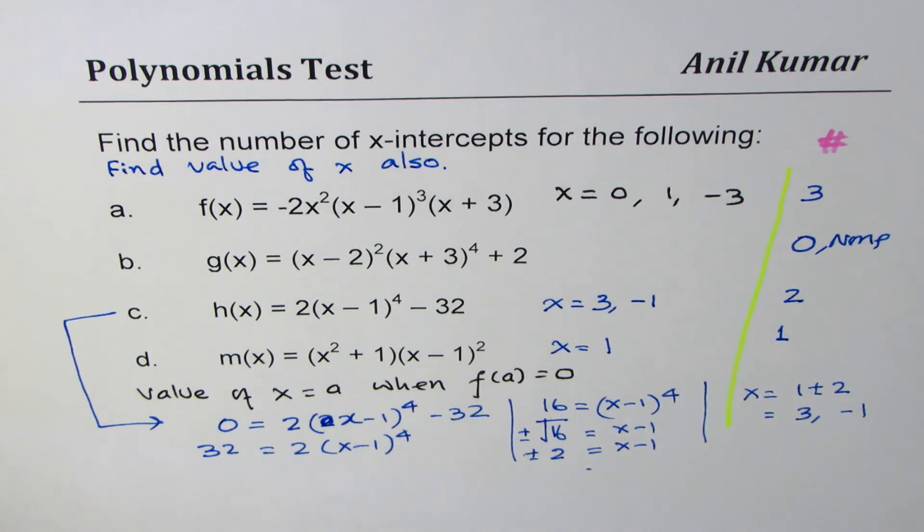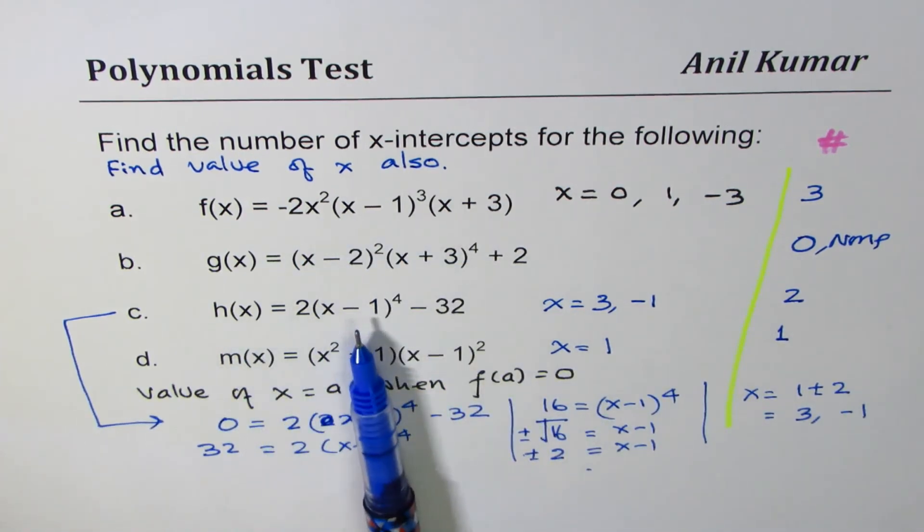Especially it's easy when they are written in factored form. If they are not written in factored form, then we may have to work it out as we did for part c. I am Anil Kumar and I hope that helps.